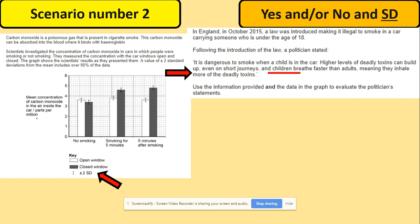We've got the mean concentration of carbon monoxide inside the car. We've got not smoking, we've got smoking for five minutes, and five minutes after smoking. We've got another key here. We've got open window, closed window, and we've got two standard deviations that show us the mean includes over 95% of data. And we've got the statement here that it is dangerous to smoke when a child is in the car. Higher levels of deadly toxins can build up even on short journeys, and children breathe faster than adults, meaning they inhale more of the deadly toxins.